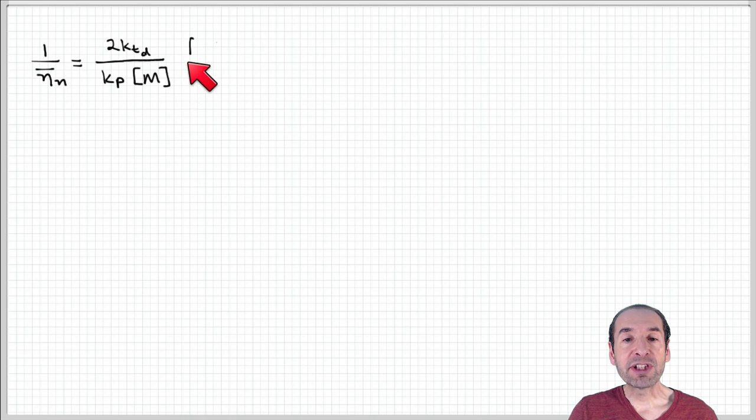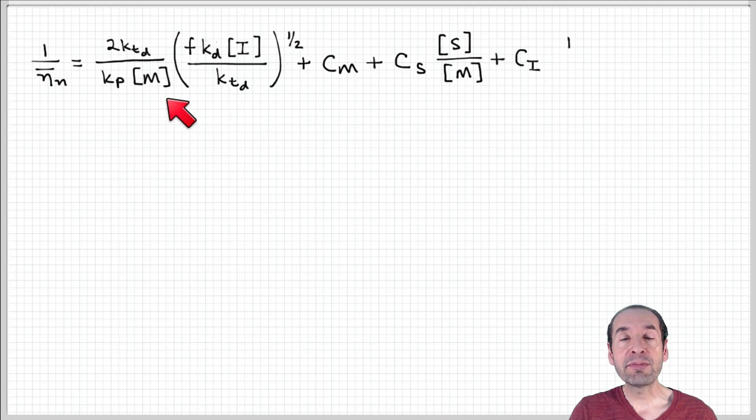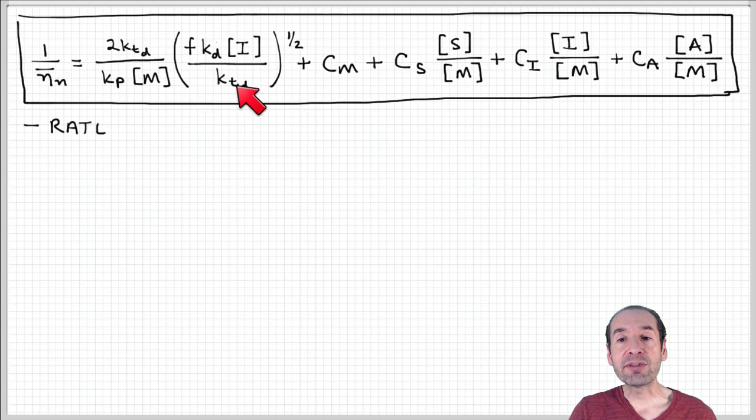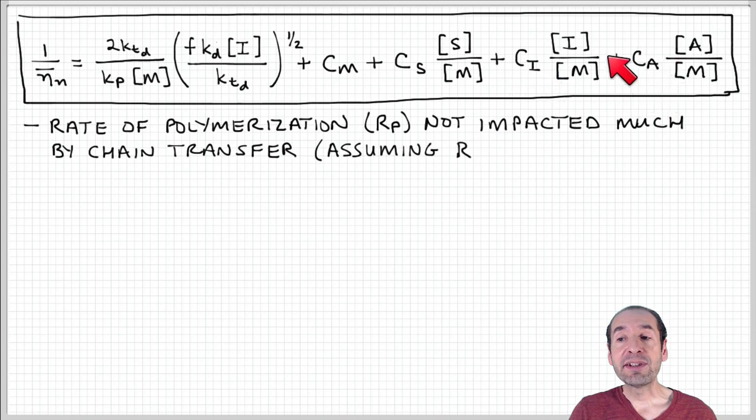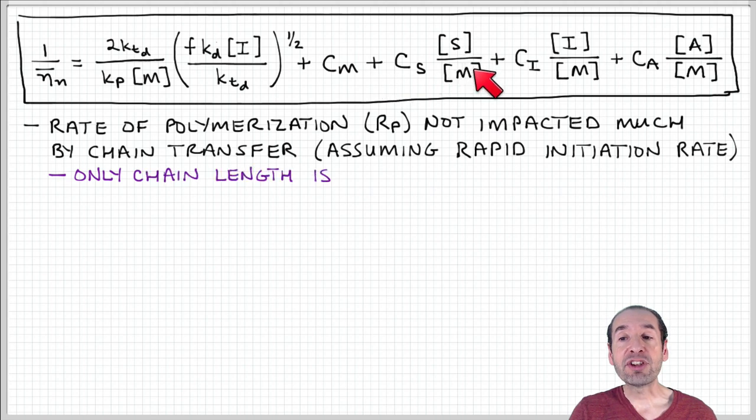So now, if I put it all together, I have a first term that's associated with the disproportionation process or the conventional termination process that we've already talked about, plus four additional terms that represent these additional chain transfer processes, monomer, solvent, initiator, and chain transfer agent. And so I can see, based on these rate constants and based on the relative concentrations of the species associated with those processes, how these additional steps will affect the degree of polymerization in my sample.